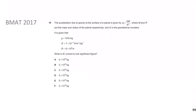We're given values for small g, big G, and big R. We need to find M correct to one significant figure. Pause the video and give this a shot. To find M, I rearrange: multiply both sides by R², so gR² = GM. Therefore M = gR² / G.